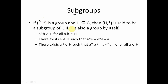If G,* is a group and if we have a set H that is a subset of the set G, then H,* — that means the subset H with the same operation * — is said to be a subgroup of G, if H is also a group by itself. What it means is if H,* satisfies closure, associativity, existence of an identity element, and every element of H must have an inverse in H itself.